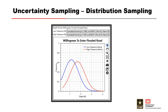Some uncertain parameters, such as willingness to enter a flooded road, are defined as distributions. During the Monte Carlo iteration, the distribution is sampled with a random number between 0 and 1 using a random number generator. The random number represents a probability, and the distribution returns the appropriate value for that probability. So for willingness to enter a flooded road, the sampled frequency relates to the depth at which an evacuating group would be willing to enter a flooded road — depending on whether they're in a low or high clearance vehicle. Each evacuating group is assigned a point along the distribution based on their vehicle type.